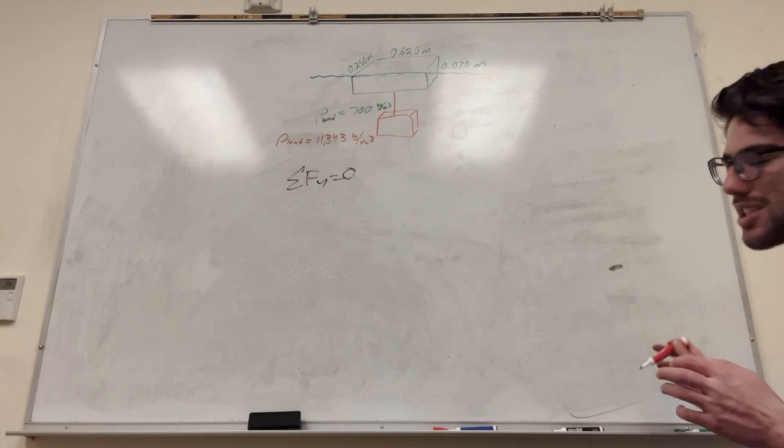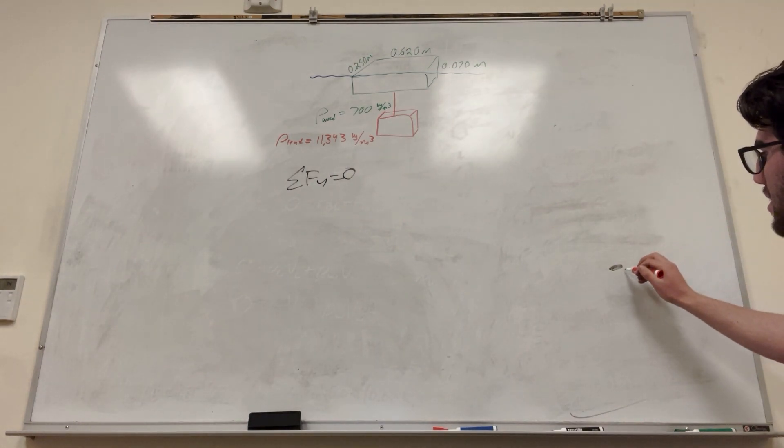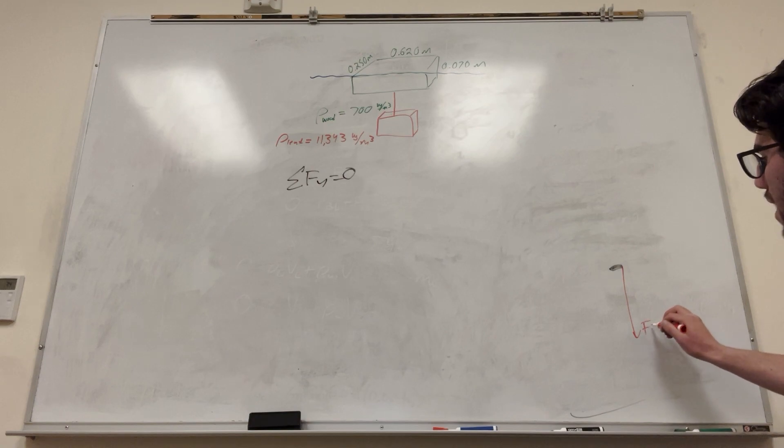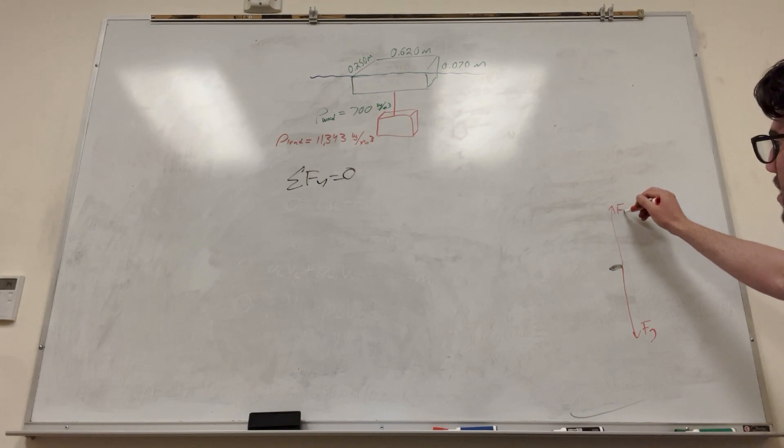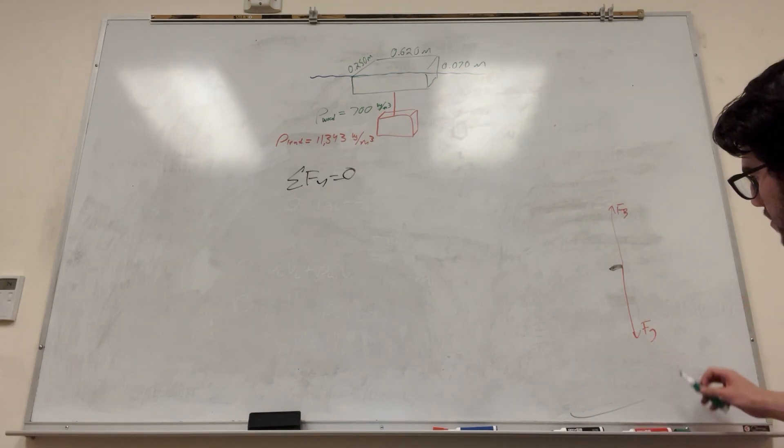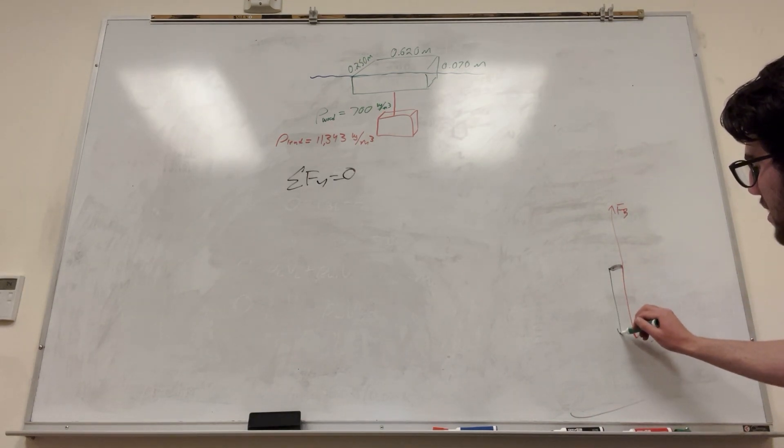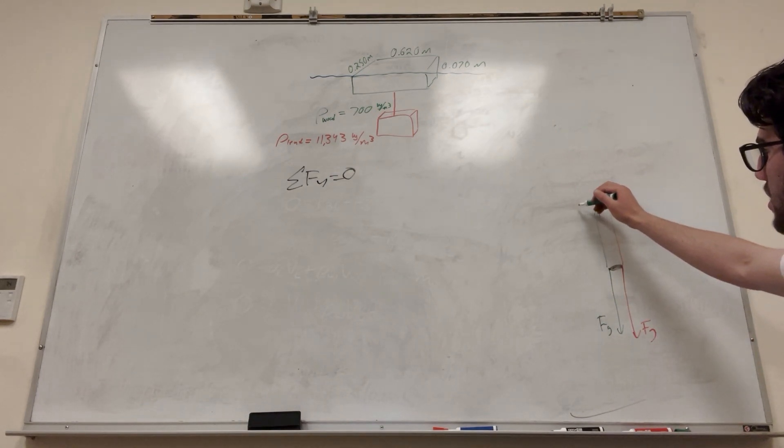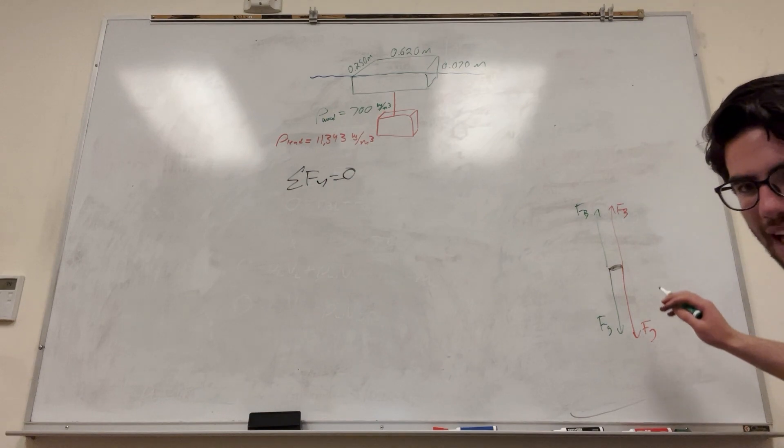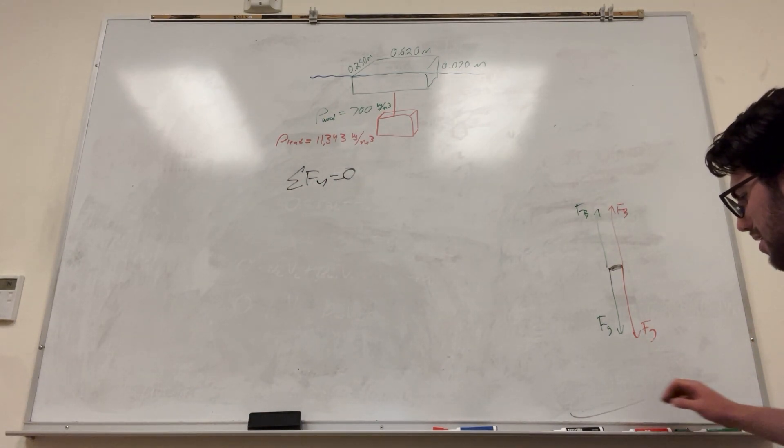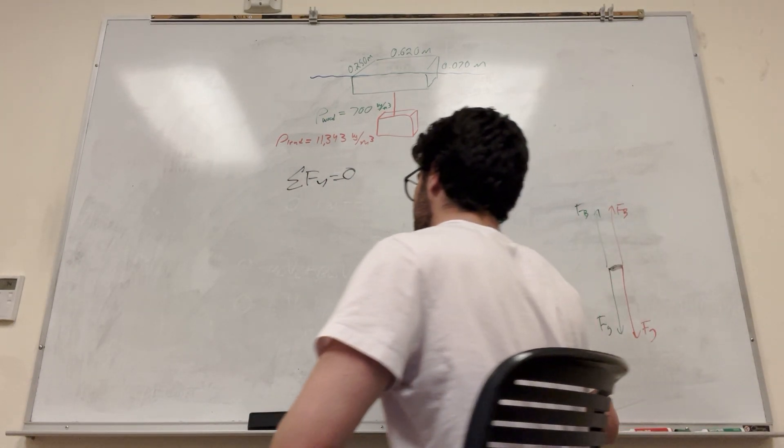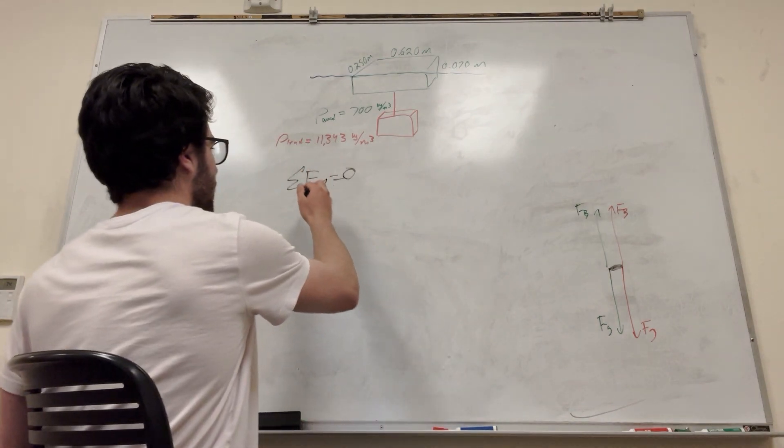So what are we going to have acting on it? So let's think about what is the lead doing to this? So lead has the force of gravity, of course, because everything has a force of gravity. But then lead also has the force of buoyancy. And then let's see about the wood. So the wood also has its gravity. And the wood also has its buoyancy. So here are what's acting on our block. And how are we going to use this? Well, let's plug it into this equation.